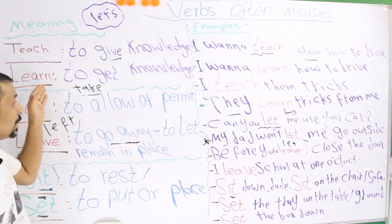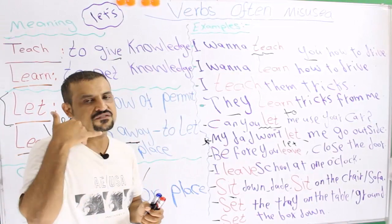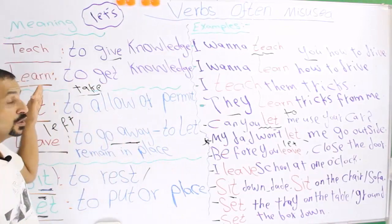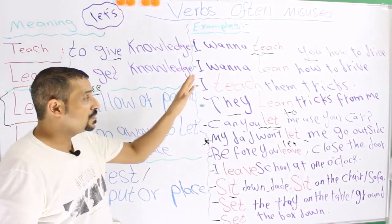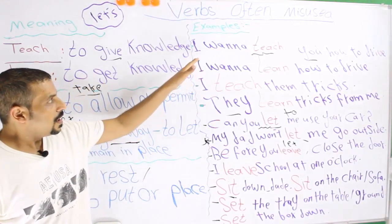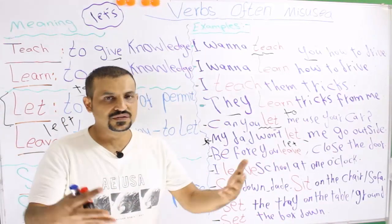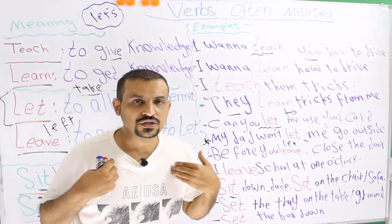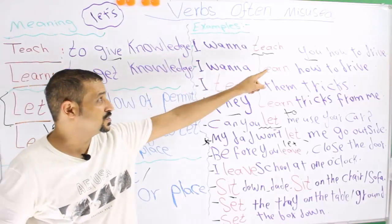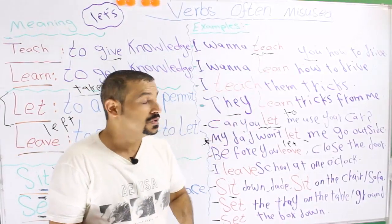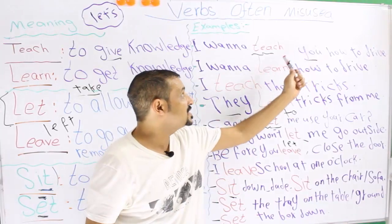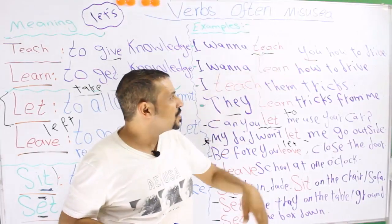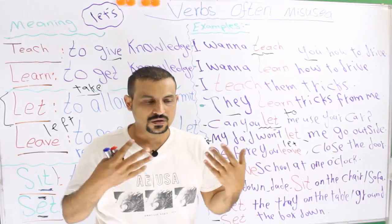With learn, you're always taking, receiving — just like receiving a call. You're not the caller, you're the receiver. For example: 'I want to teach you how to drive.' I know how to drive, I have knowledge, so I'm going to give you that knowledge. Teach always has an object — teach who? Teach you. So: 'I want to teach you how to drive.' But: 'I want to learn how to drive' means I don't know how to drive, so I need somebody to teach me.